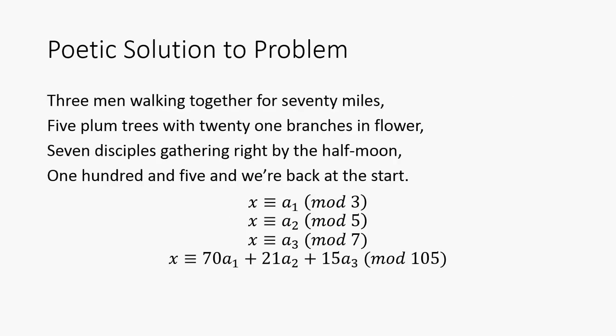Well, this is how we proposed the solution to it. 3 men walk together for 70 miles. 5 plum trees with 21 branches and a flower. 7 disciples gather by the half moon. 105, and we're back at the start.